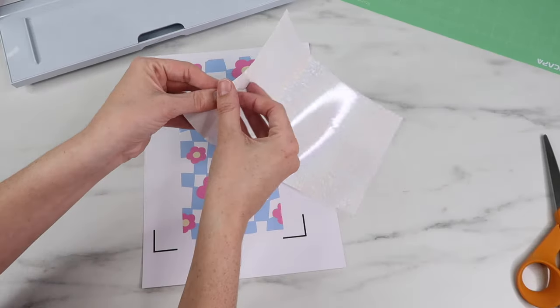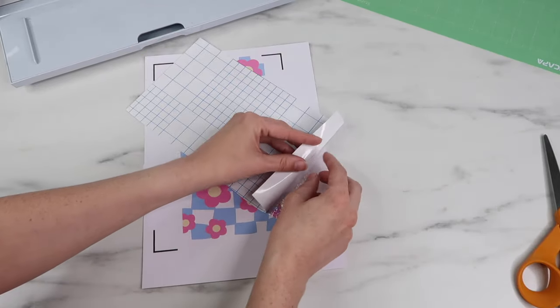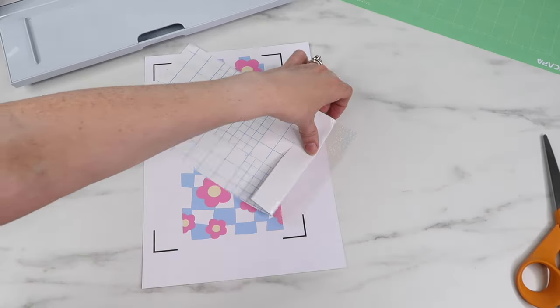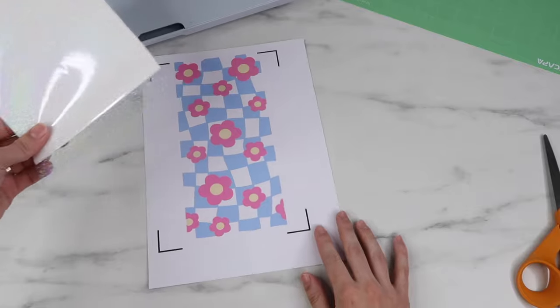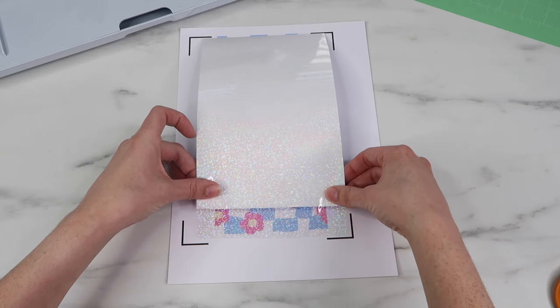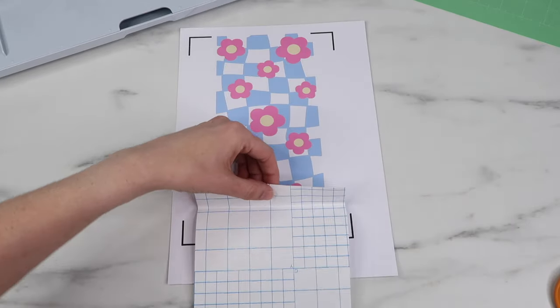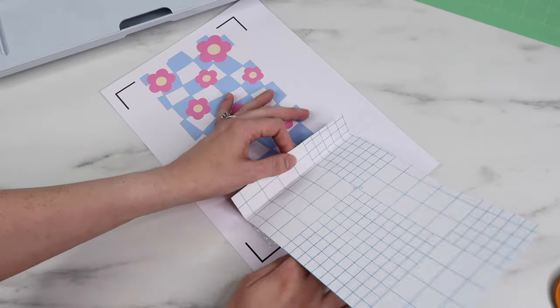To add my laminate, I like to fold back just a little bit of the backing. I place down that sticky piece that is exposed, then I just remove the rest of the backing. I used to do this slowly, but honestly I do this pretty quickly and it works better to do it that way.